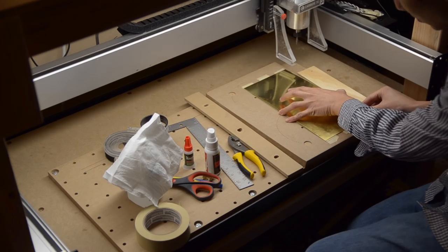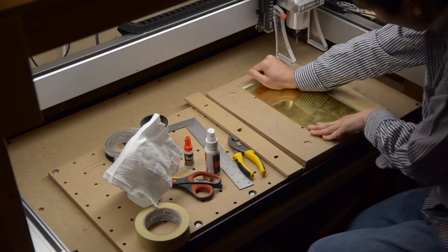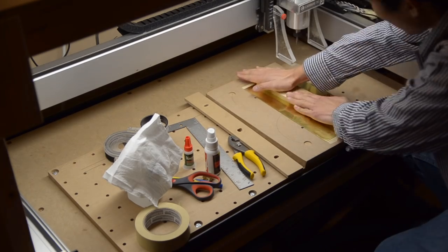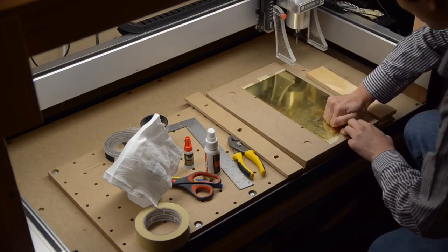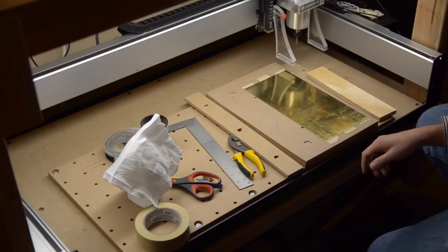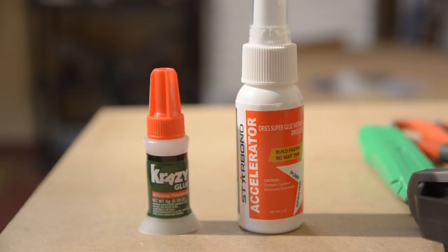On the brass side, I gave the masking tape a light misting with CA glue activator. Then, I aligned my strips of tape and pressed the brass firmly down on the table. I've heard of people skipping the activator, opting instead to just wait a little longer for the CA glue to set. The choice is up to you since I don't think it significantly changes the effectiveness of the workholding method.